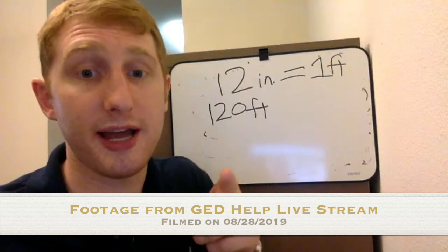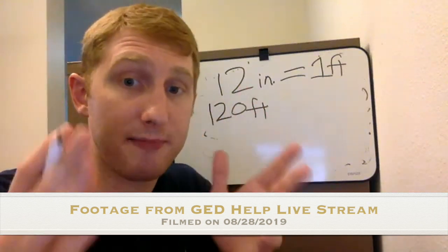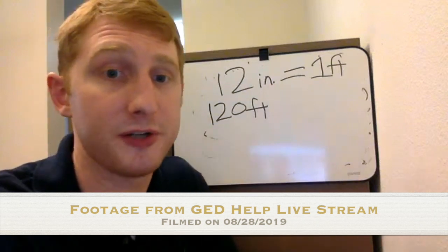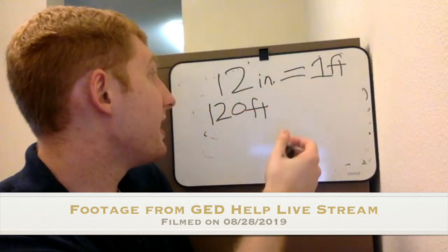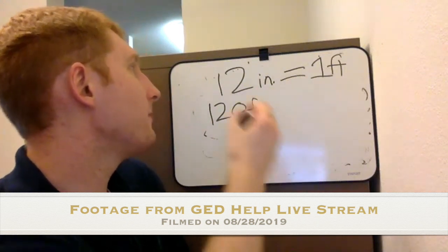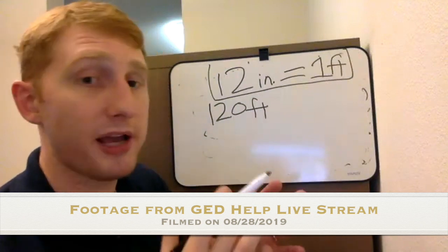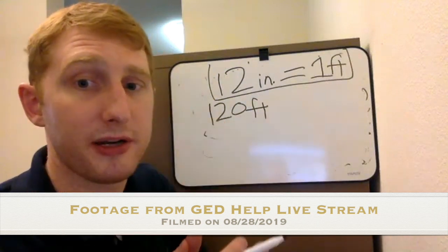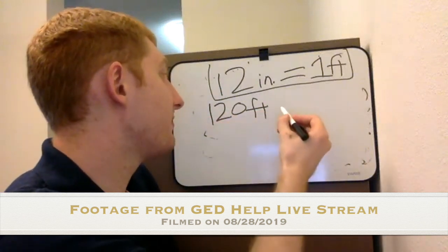You also might get conversion questions on science, especially with temperature going from Fahrenheit temperature to Celsius temperature. You'll need to know how to convert there too. So we've got 120 feet and we want to go into inches here. What we do is this is our guide here. So this is our conversion factor. Some teachers call it something different, but it's a conversion factor. That's what I call it.